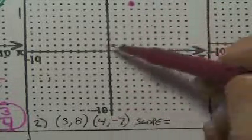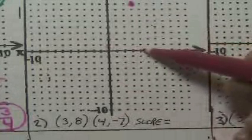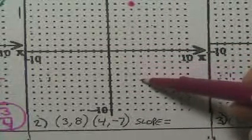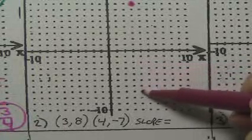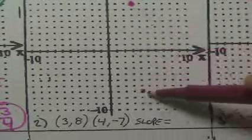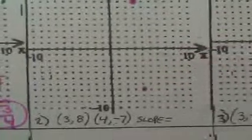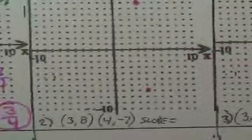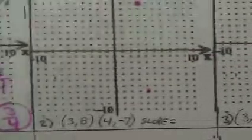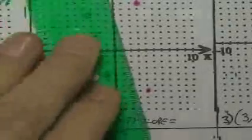And then four, negative seven. One, two, three, four. Down seven. One, two, three, four, five, six, seven. Wow, this is going to be, the run on this is very small. So now I graph this line going through the entire graph through those points.